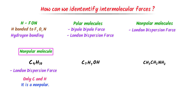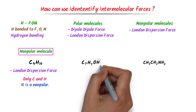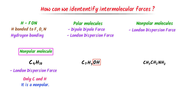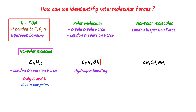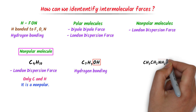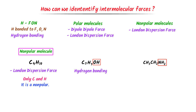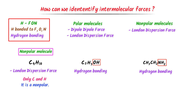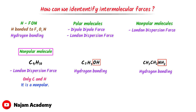Secondly, in this molecule we can see that there is oxygen and hydrogen. We know that when hydrogen is bonded to oxygen, it contains hydrogen bonding. Thus, this molecule contains hydrogen bonding. Thirdly, in this molecule there is hydrogen and nitrogen. We know that when hydrogen is bonded to nitrogen, it contains hydrogen bonding. Thus, this molecule contains hydrogen bonding. Therefore, using this trick, we can easily identify intermolecular forces in any molecule. I hope that you have learned this super easy trick.